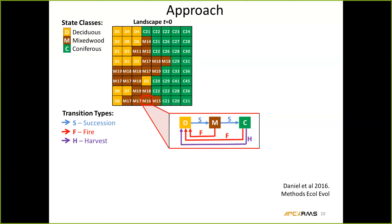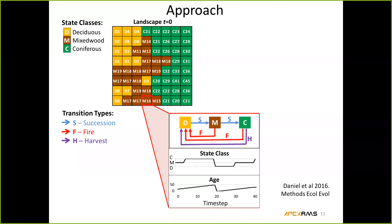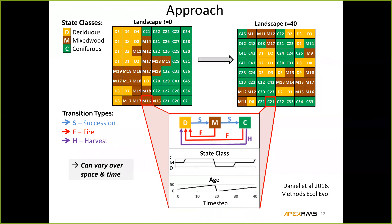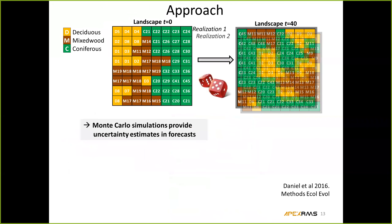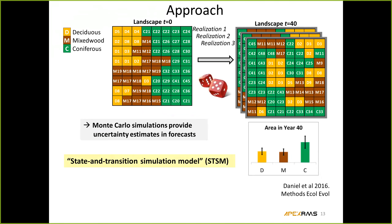If we add rates to these transition pathways — specified as either an elapsed number of time steps, an annual probability of occurring such as for fire, or some target area to apply across the landscape such as for timber harvest — we can make projections about what any one cell might look like over time. If we do that for all cells across the landscape, we can produce a map of what the landscape might look like in the future. Because these models are stochastic and use probabilities, we run multiple Monte Carlo realizations to produce not just one projection but a range of possible futures, which is one way we incorporate uncertainty.